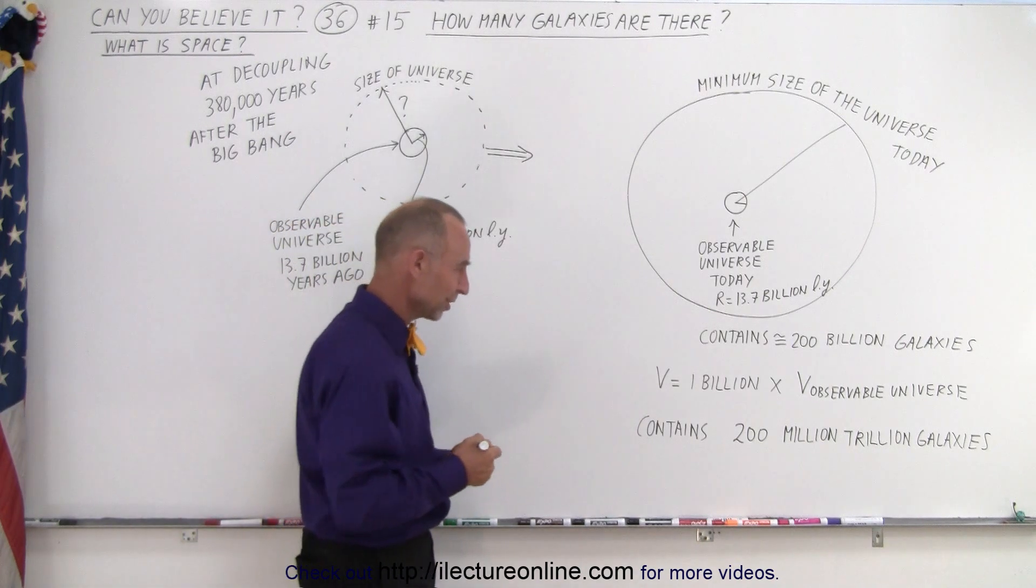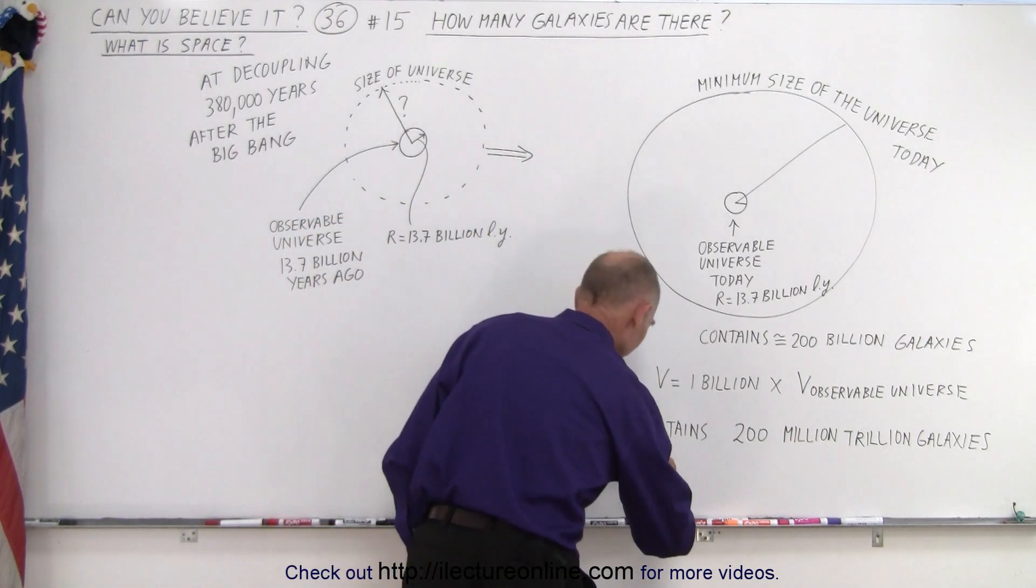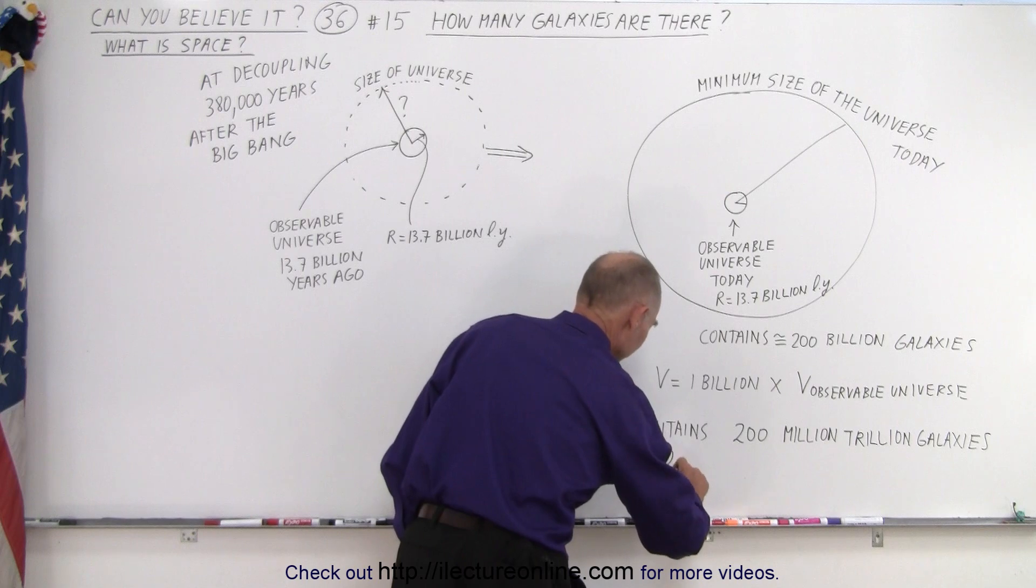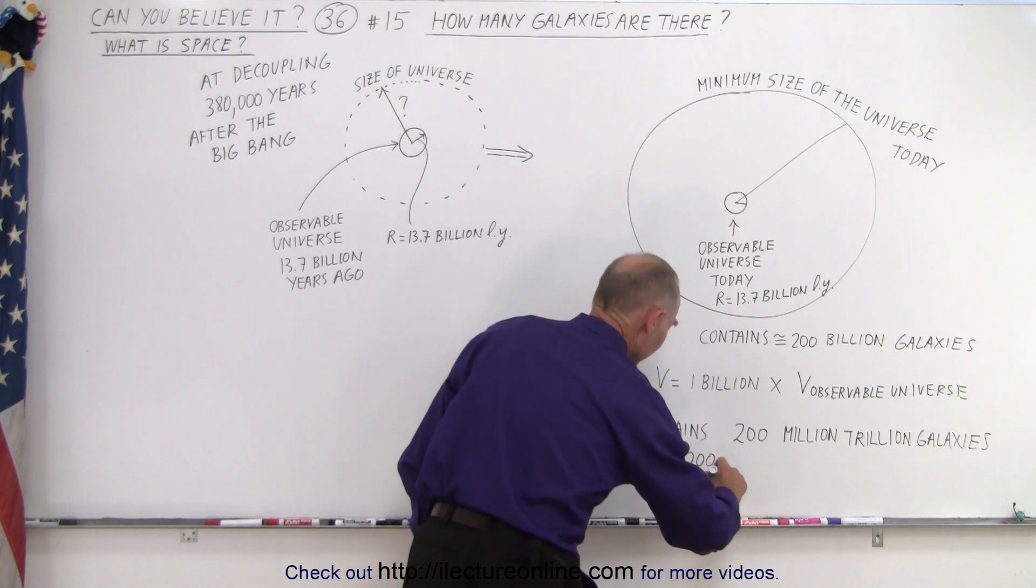200 million trillion. So 200 million, 200,000, 200 million, and now a trillion is 12 more zeros.